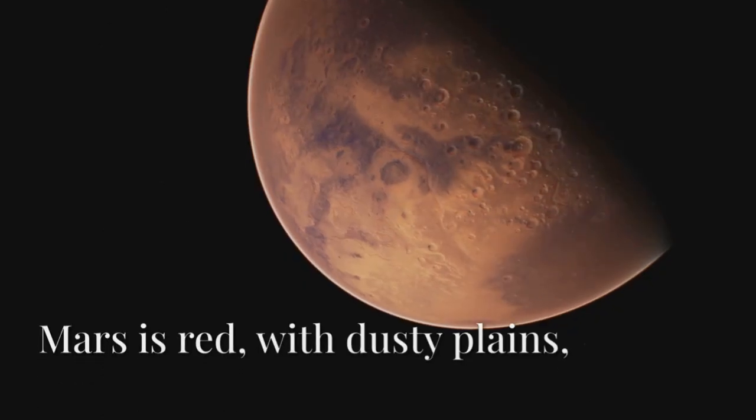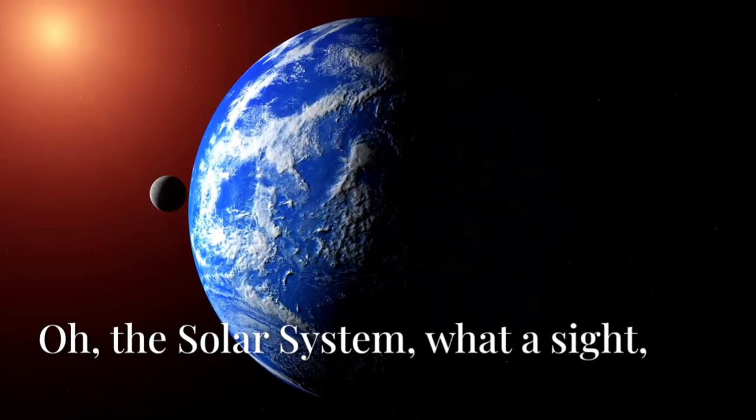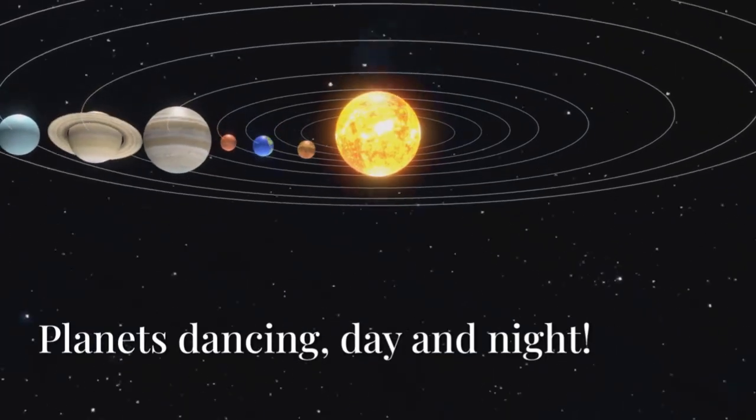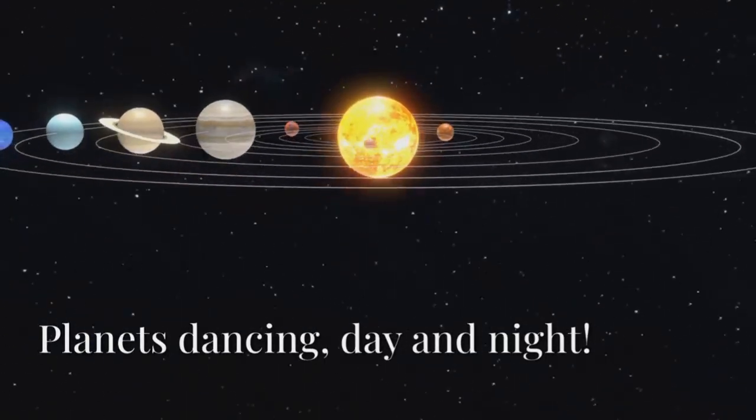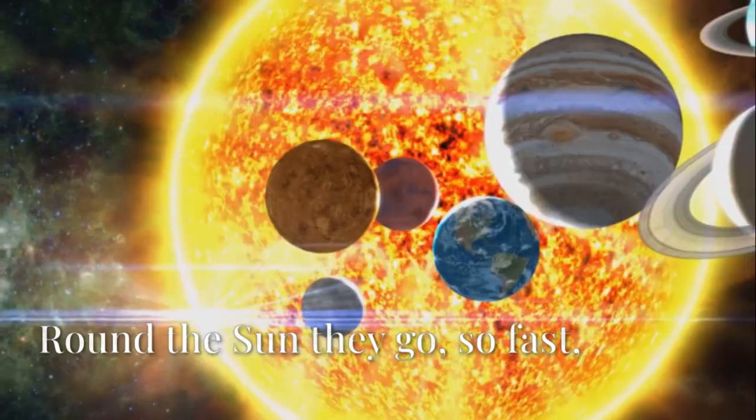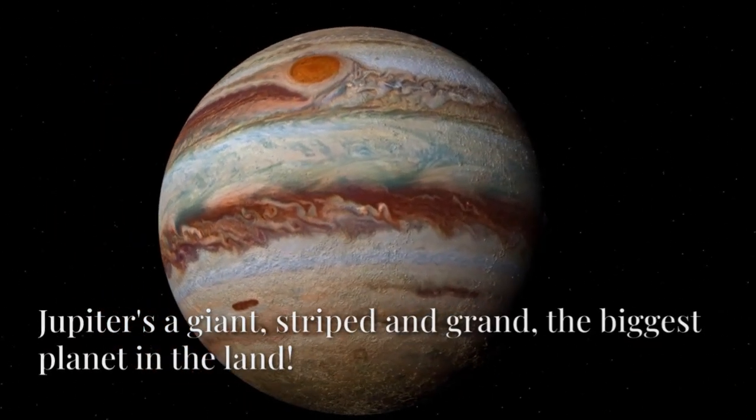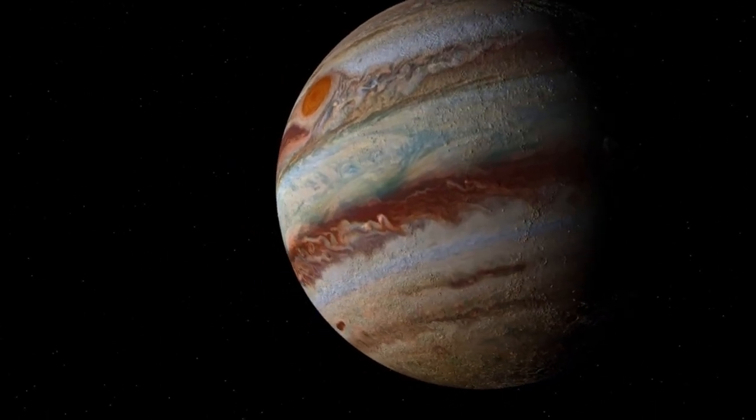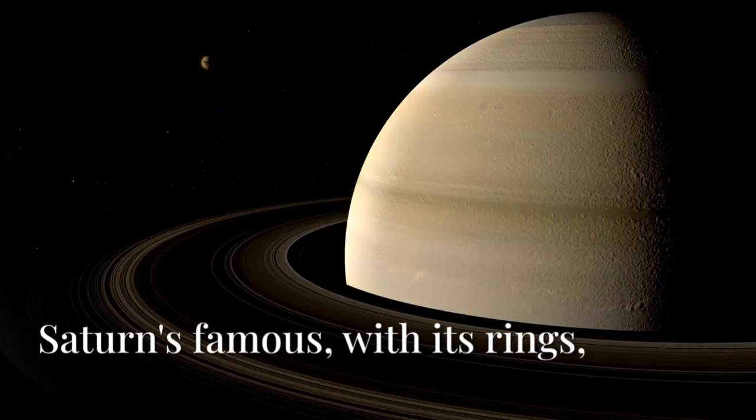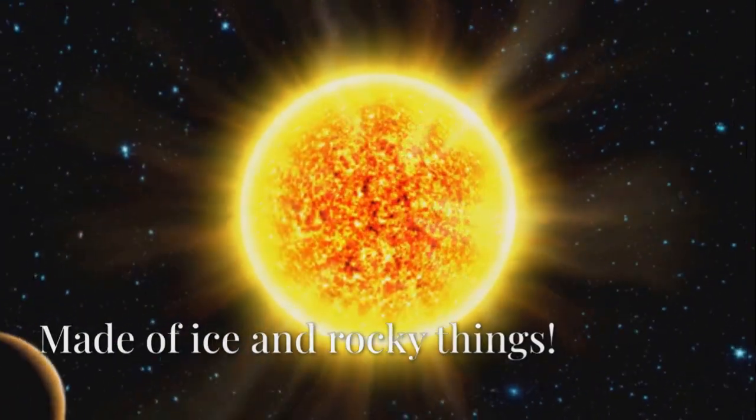Oh, the solar system, what a sight! Planets dancing day and night. Round the sun they go so fast, our cosmic home, built to last. Jupiter's a giant, striped and grand, the biggest planet in the land. Saturn's famous with its rings, made of ice and rocky things.